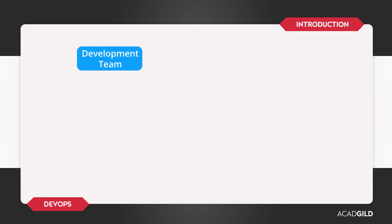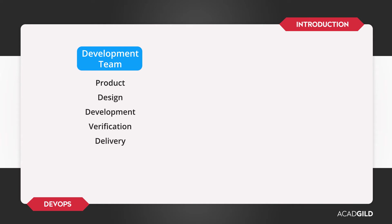Now, let us understand what the development team is. A development team consists of the people who work towards the product and are responsible for designing, development, verification, and delivery of the product.